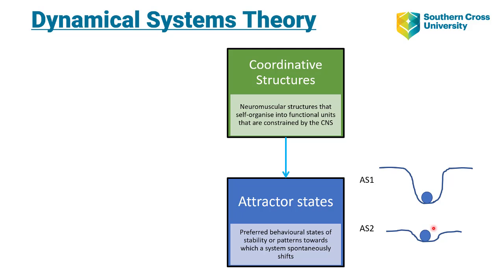What controls attractor states? Coordinative structures — specifically the neuromuscular structures. Coming back to the concept of self-organisation, our coordinative structures dynamically self-organise their motor units into functional units that constrain the degrees of freedom of the nervous system and neuromuscular system, to create or perform an action using a given attractor state.